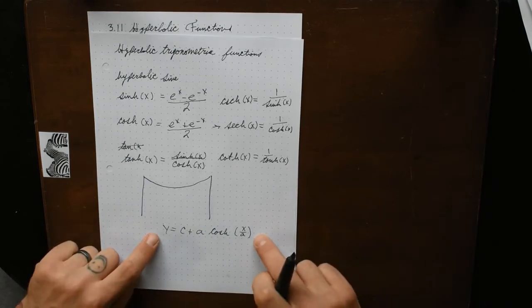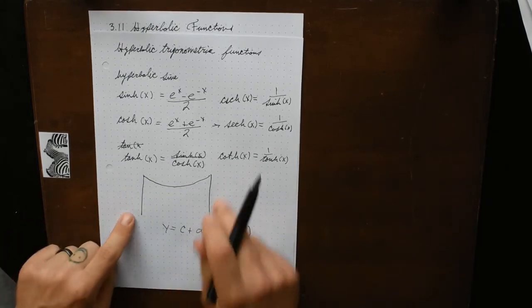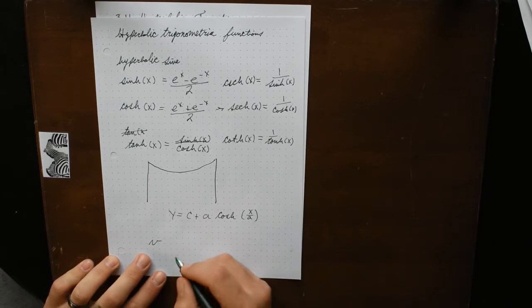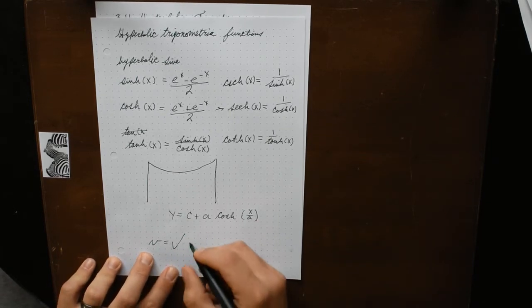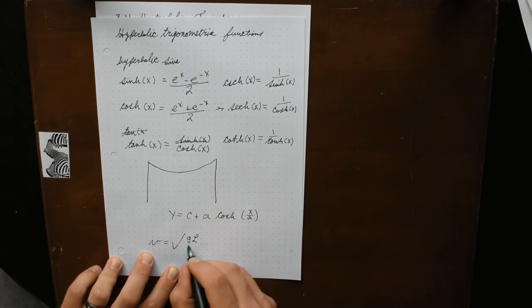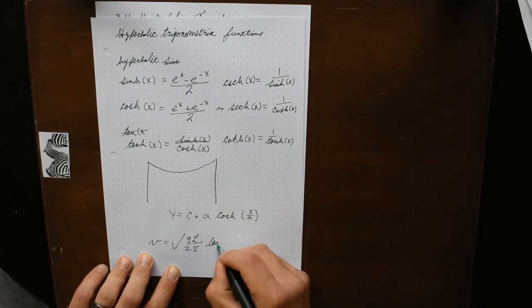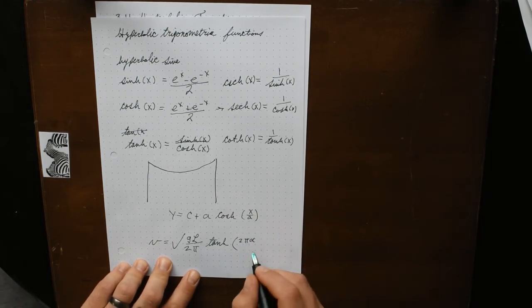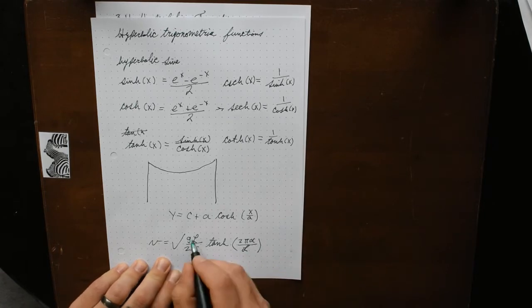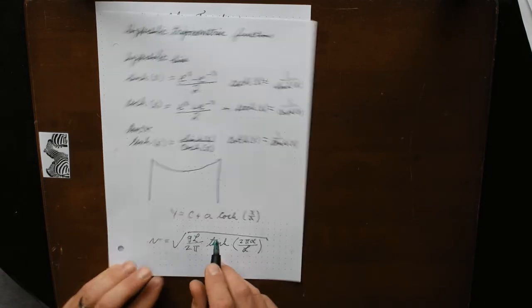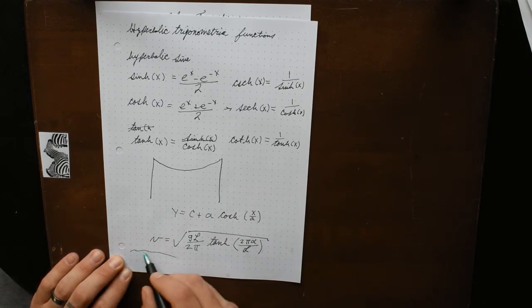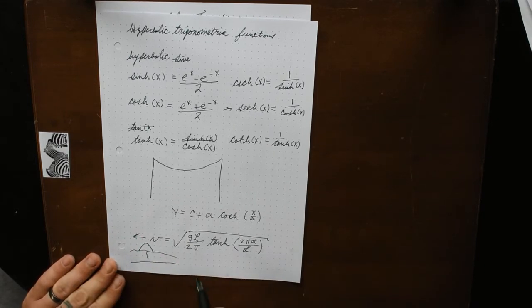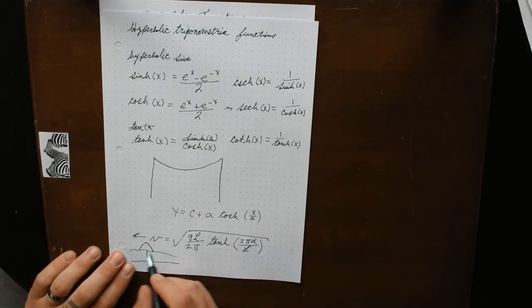This equation is used to model the sag of an electrical line between two poles. Also, the velocity of a moving wave is given by the square root of gravity times the length of the wave divided by 2π, all times tanh(2πd divided by L), where d is the depth of the water and L is the length of the wave.